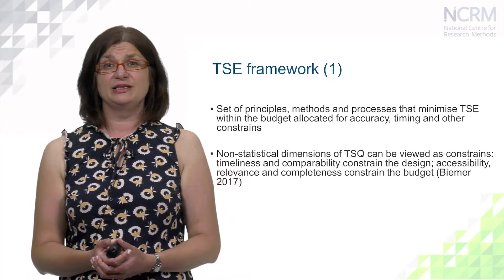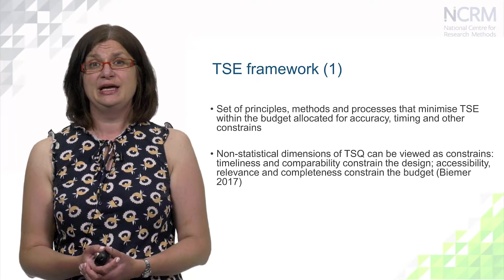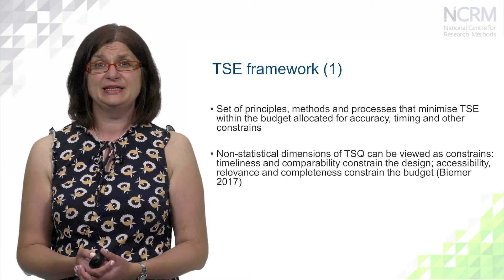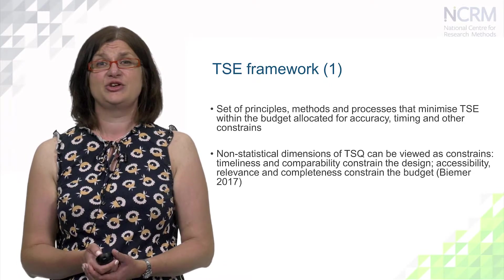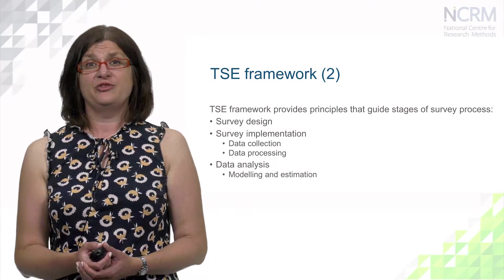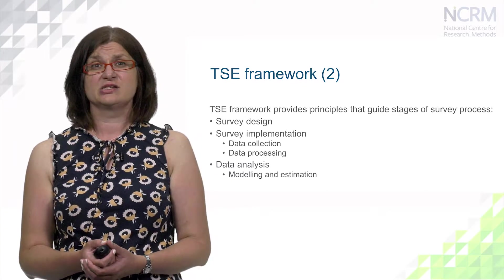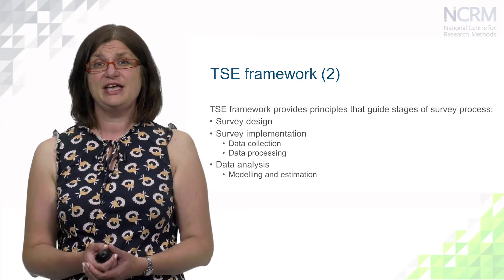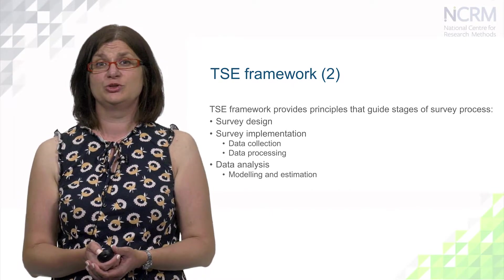Non-statistical dimensions of total survey quality can be viewed as constraints according to Paul Biemer. For example, timeliness and comparability constrain the design, while accessibility, relevance and completeness constrain the budget. The total survey error framework provides principles that guide stages of the survey process – survey design, survey implementation, survey evaluation, and data analysis – and each stage provides opportunities for errors which add up to total survey error.